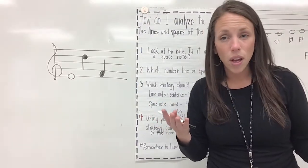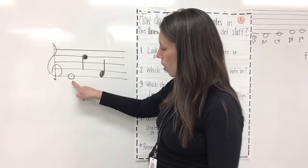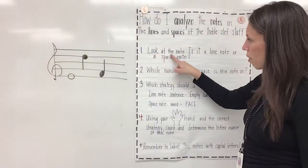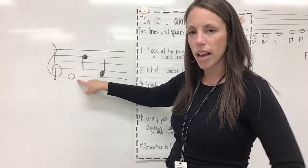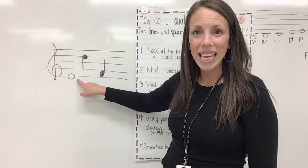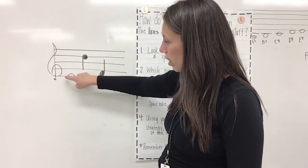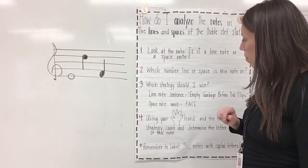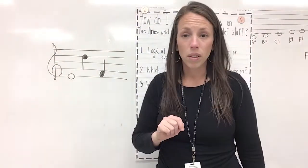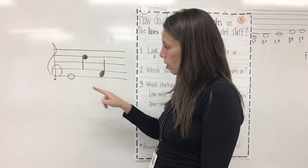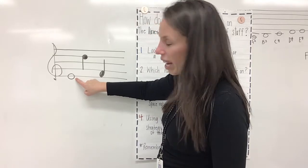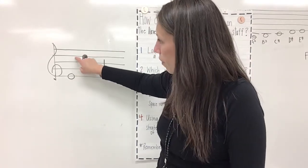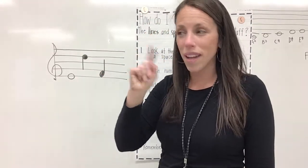Let's try the first note together. We're gonna look at that note — is it a line note or a space note? Go ahead and yell it out. You're right, it's a line note. We see the line going directly through the center of the head. Next, which number line or space is the note on? Remember, we count from the bottom to the top. Which line is this note drawn on? Line one. That's correct — one, two, three, four, five. So, line one.